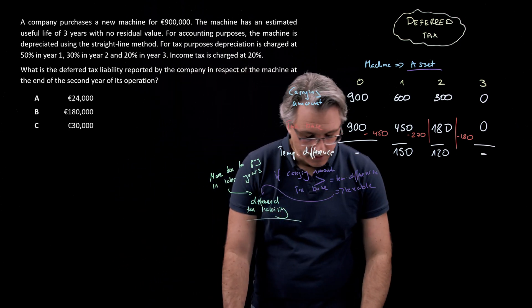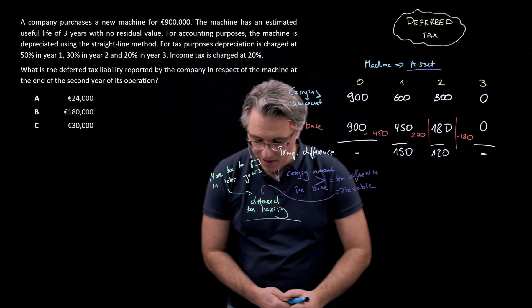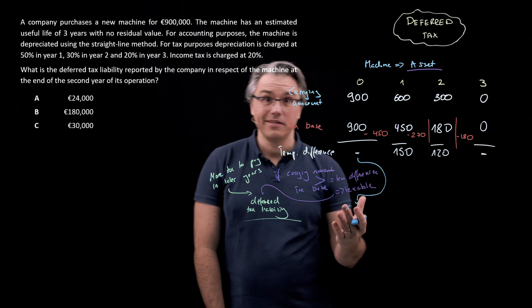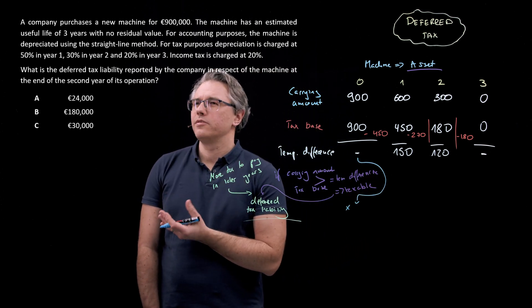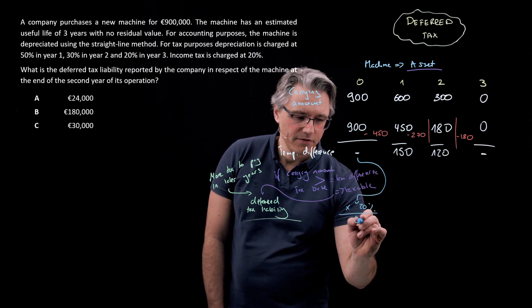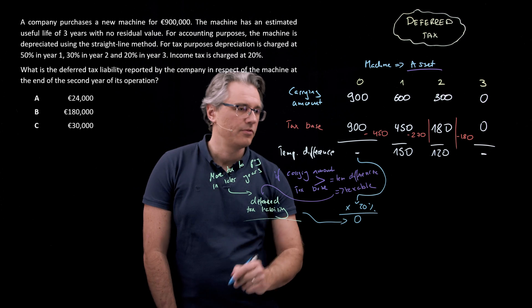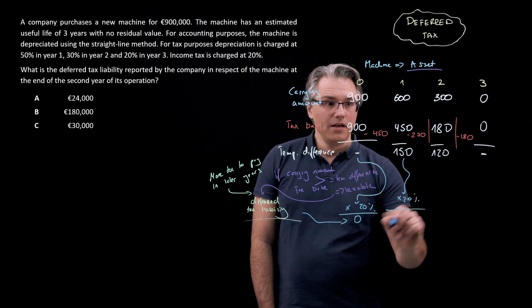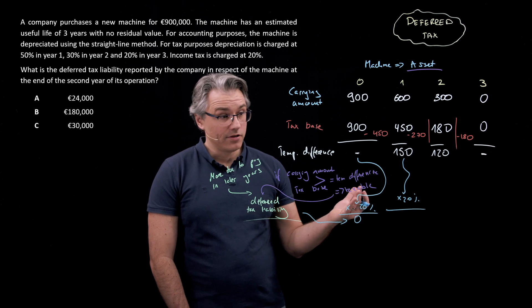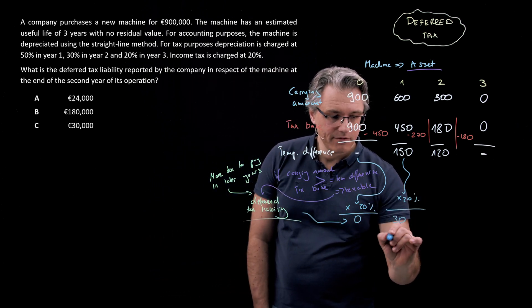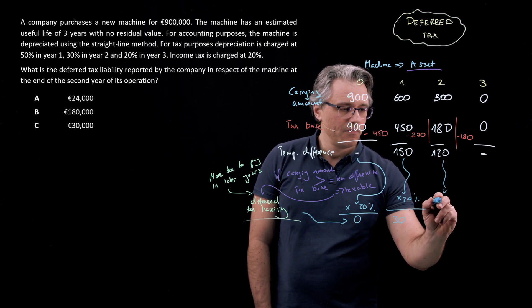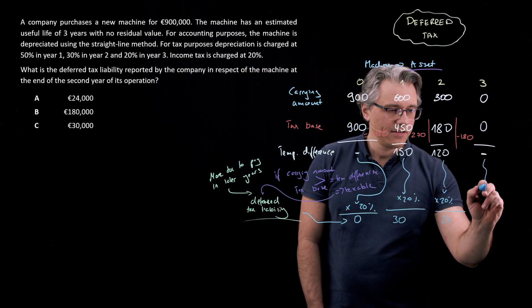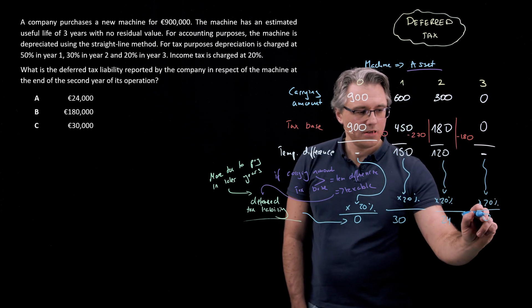The way to compute the size of that deferred tax liability is simply to take the size of the difference and multiply by the tax rate, which in the example we're told is 20%. So obviously zero times 20% means you've got a zero deferred tax liability at 0.0. But at the end of year one, you take this 150, multiply by 20%, and you get a deferred tax liability of 30,000. Then year two, take this 120, multiply by 20%, that's going to be 24,000. And then in the end it disappears and becomes zero.